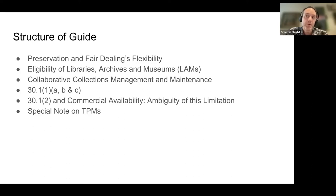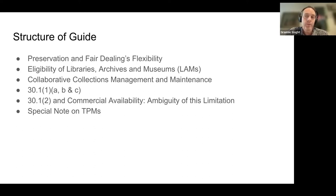The guide then discusses eligibility, and notes that 30.1 also contains a provision that may allow for some collaborative collection maintenance and management between eligible LAMs. It then covers the three most relevant clauses as they pertain to software preservation, the key limitation of commercial availability — which has a particular complication in Canada — and finally the issue of TPMs and Canada's very broad anti-circumvention regime in place since 2012.